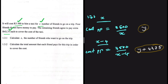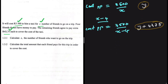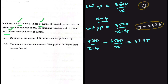The money the (x minus 4) friends pay minus the money the x friends pay must equal 43.75. That is to say: 3500 divided by (x minus 4), minus 3500 divided by x, equals 43.75. Let's go ahead and find the value of x.